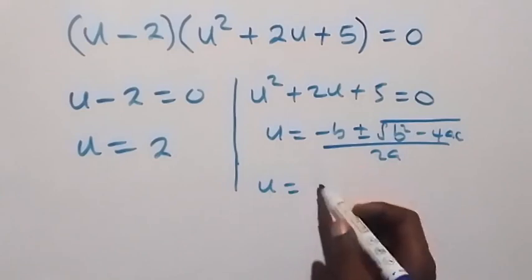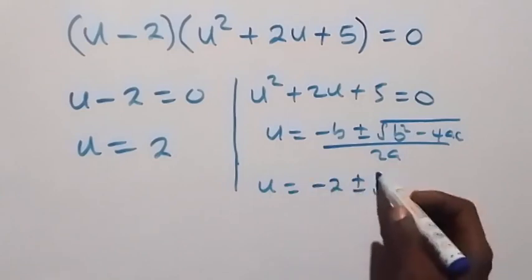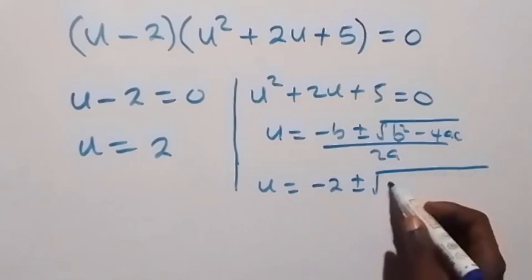That's b squared minus 4 times 1 times 5.